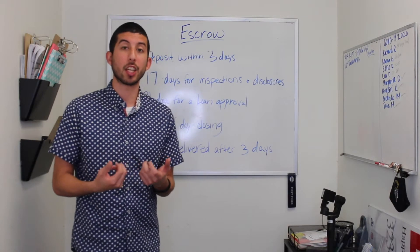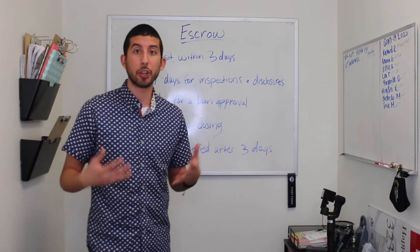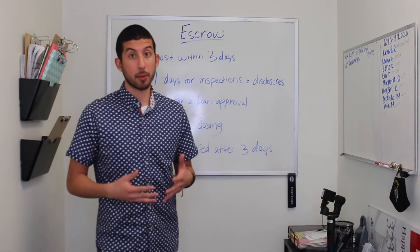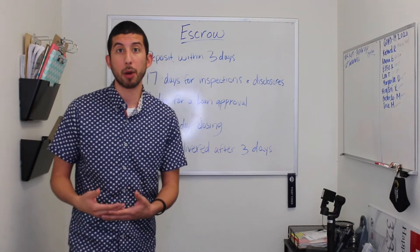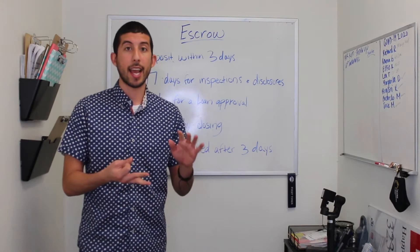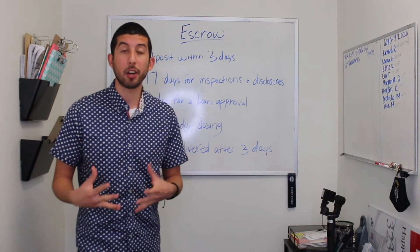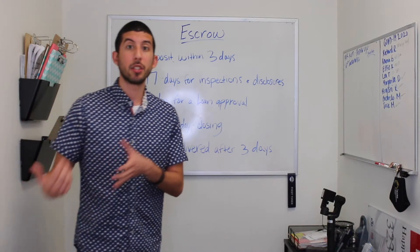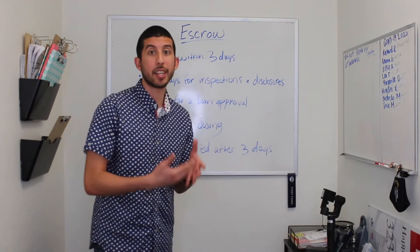As a buyer, you have three days to deliver your deposit to escrow. You also have 17 days to perform whatever inspections you want on the property — this includes property inspections, termite reports, and appraisals. You also have 17 days to return the disclosures that the seller gave you, executed and agreed upon.